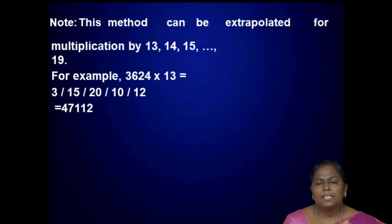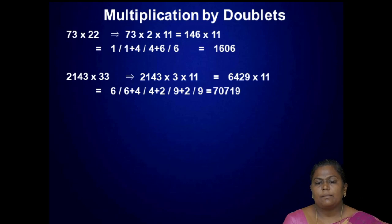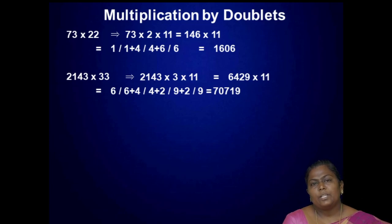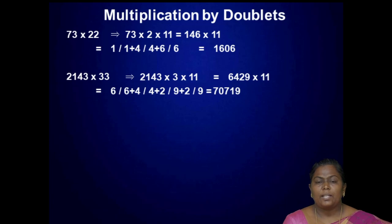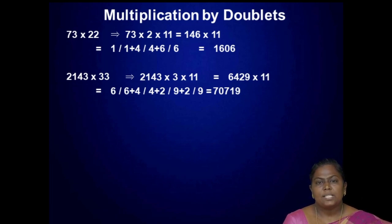This method can be extended for multiplication by 13, 14, 15 up to 19. Next, multiplication by doublets — for example 73 into 22. Since 22 can be written as 2 into 11, first double 73 to get 146, then apply the pairing method: 1, 1 plus 4, 4 plus 6, 6 gives 1606.